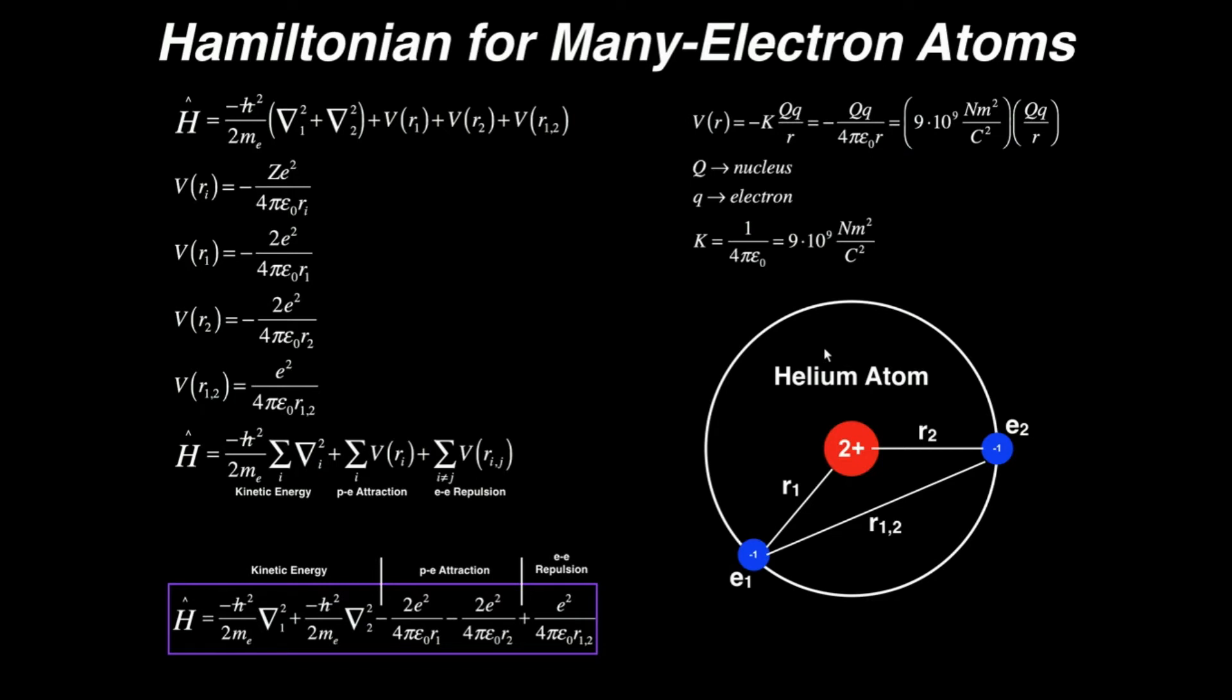The Hamiltonian is really just the sum of three things, and each of these things can have multiple terms. You have the kinetic energy of each electron. The nucleus doesn't move. We assume that even though the atom can be moving all around and so forth, the nucleus is static. The atom is static, so the nucleus is static, and only the electrons move relative to the nucleus. So the nucleus has no kinetic energy, but the electrons do have kinetic energy.